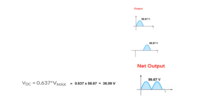Combining both halves gives the net full wave rectifier output. Applying the formula: V_DC = 0.637 × 56.67 = 36.09 volts DC. I hope this gives you an understanding of how to solve this type of problem. If you found this beneficial, share it with your friends, like and subscribe — thank you.